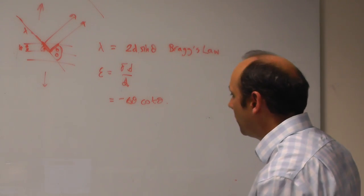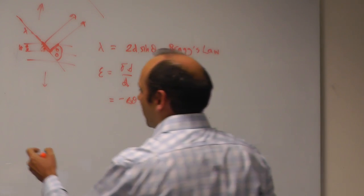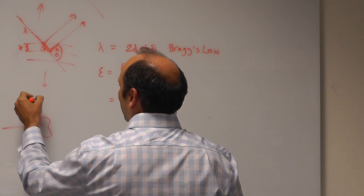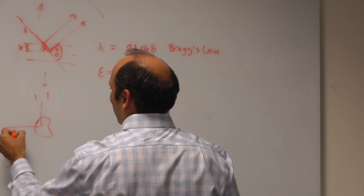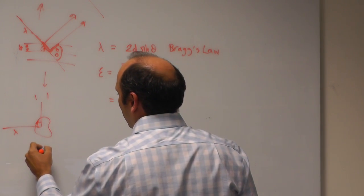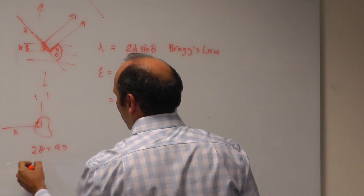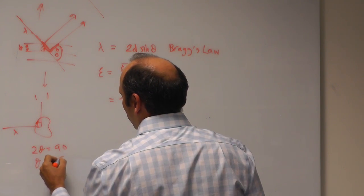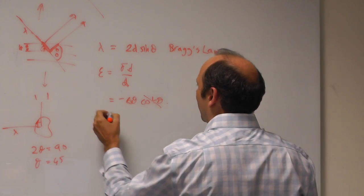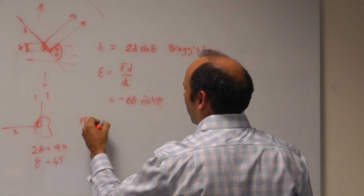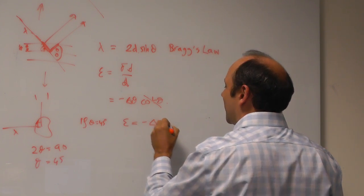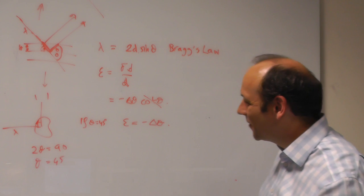If I pick the radiation in my diffractometer, if I pick lambda such that 2 theta is equal to 90 degrees, then theta will be 45 degrees, and tan 45 is 1. So that will disappear, and if theta is equal to 45 degrees, the strain will just be equal to minus delta theta. Very nice. Very nice indeed.